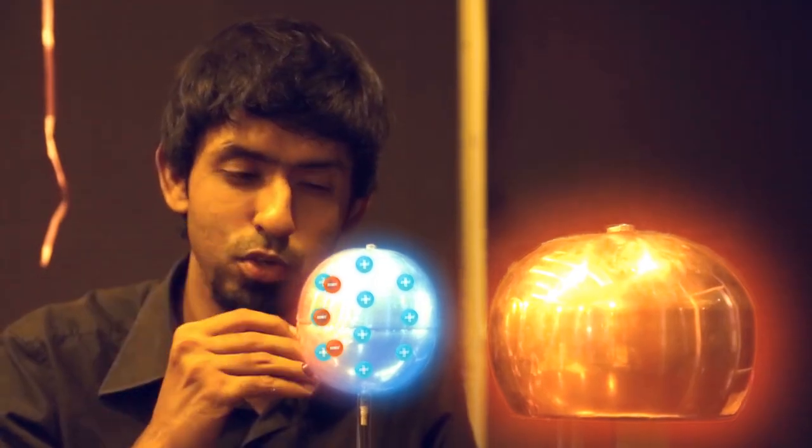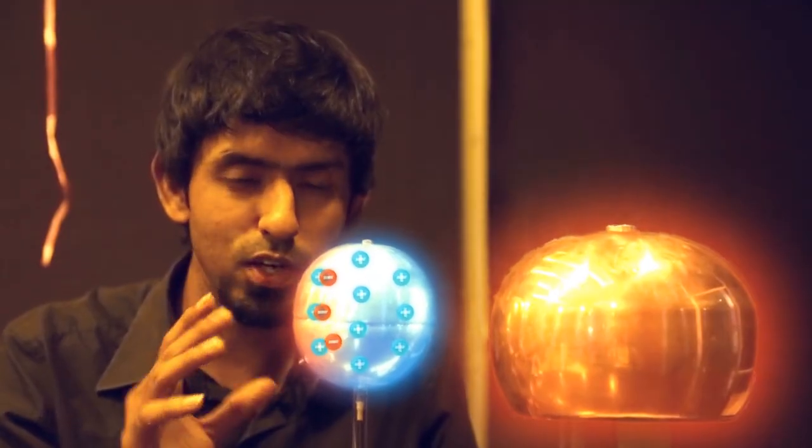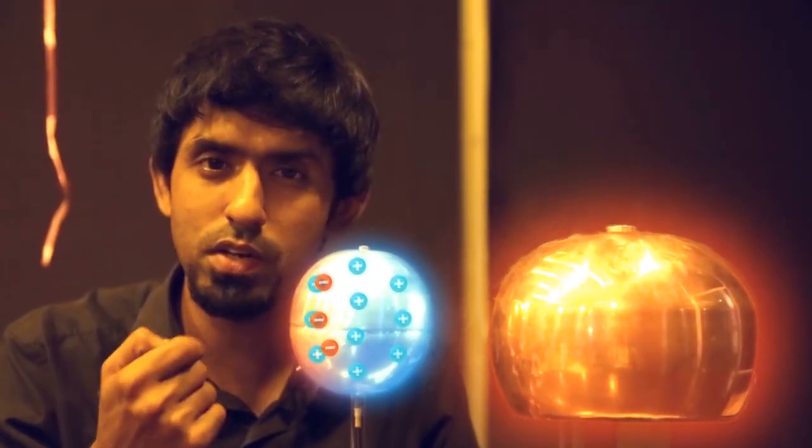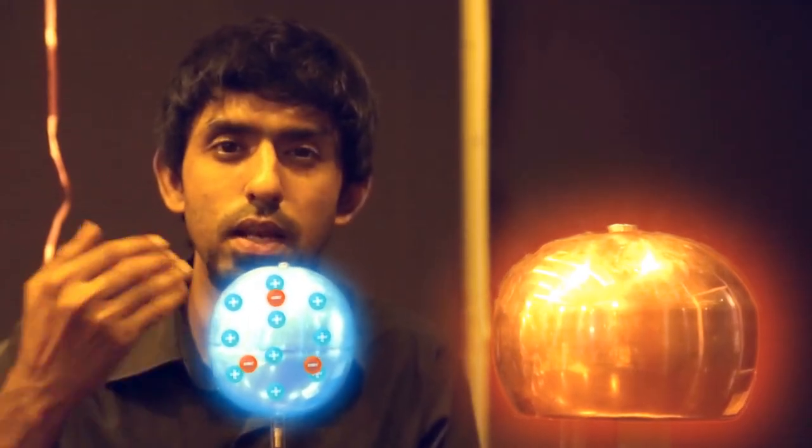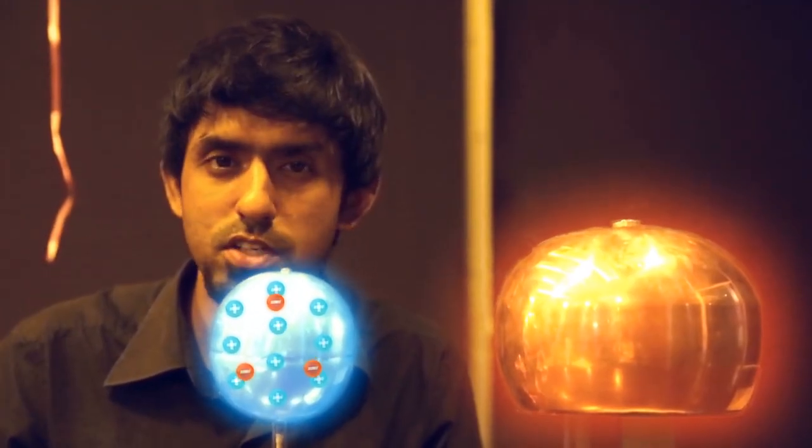You had some electrons, some protons, both were equal. This ball was neutral. But, through some sneaky trick, you made it so that some of the electrons have left now. Now, they can't come back. Even if you move it away, now this ball has lesser electrons than protons. Which means it is positively charged.